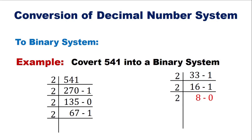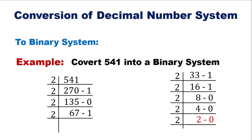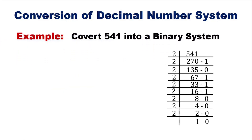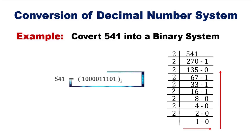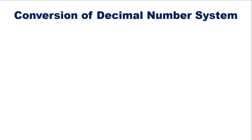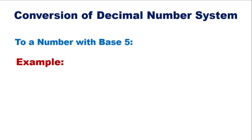जब हम 8 को 2 से divide करते हैं तो हमें 1 हासल होगा, और remainder हमें 0 हासल होगा. जब हम इस factorization को bottom to top (right to up) लिखेंगे तो इस question का हमें answer हासल होगा. अब हम देखते हैं किस तरह एक decimal number को base 5 number में convert किया जाता है.